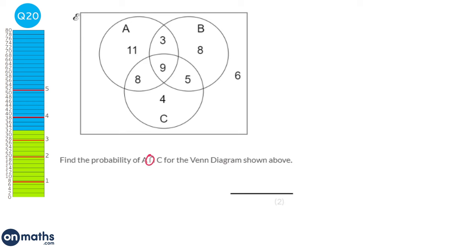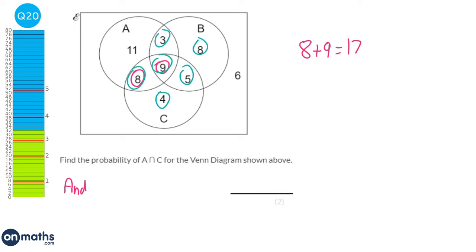The symbol here means 'and'. The way to remember it is to draw the symbol and put a line through it to make the word 'and'. We're looking at the probability of getting something in A and C. The only values in both A and C are 8 and 9, giving a total of 17. There are 54 numbers in total. So the probability is 17 over 54.